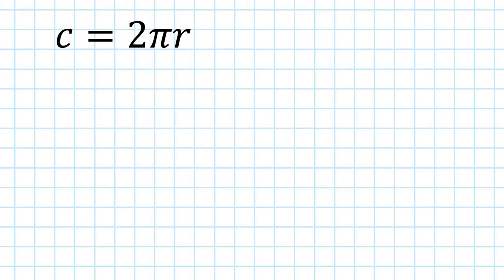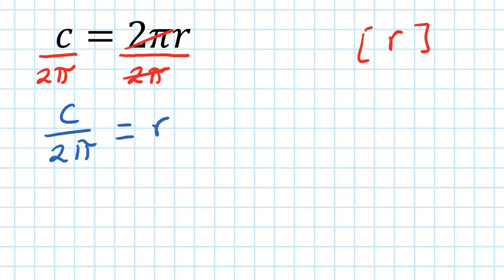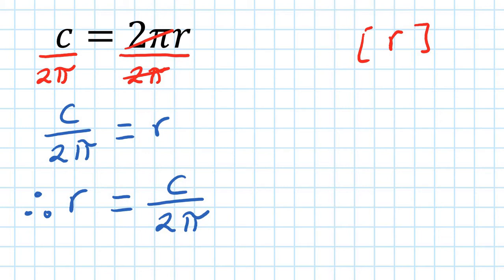The circumference of a circle is C equals 2πr. Let's make r the subject — solve for r. 2πr means 2π times r, so to get r by itself I do the opposite: divide by 2π on both sides. This disappears, leaving C over 2π equals r. We rewrite this as r equals C over 2π. This is actually a one-step equation — you only do one step and get the answer.